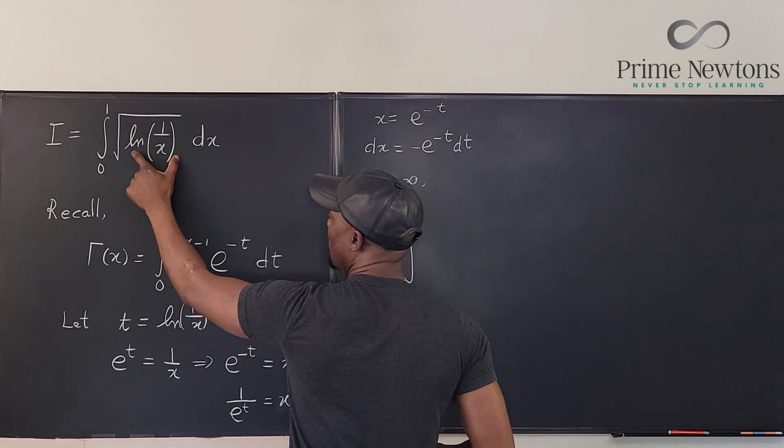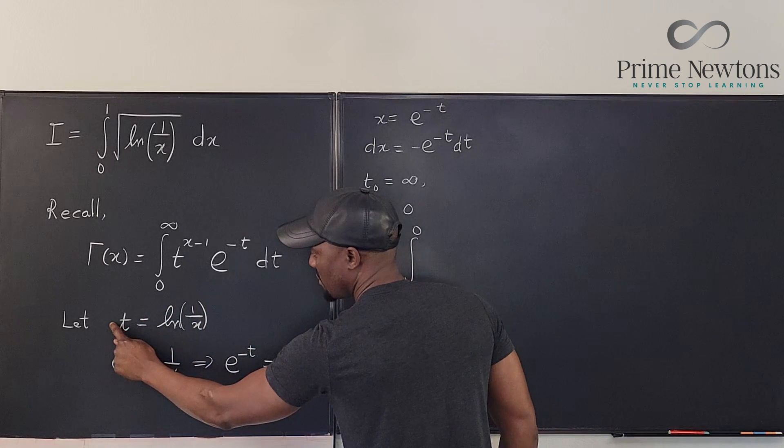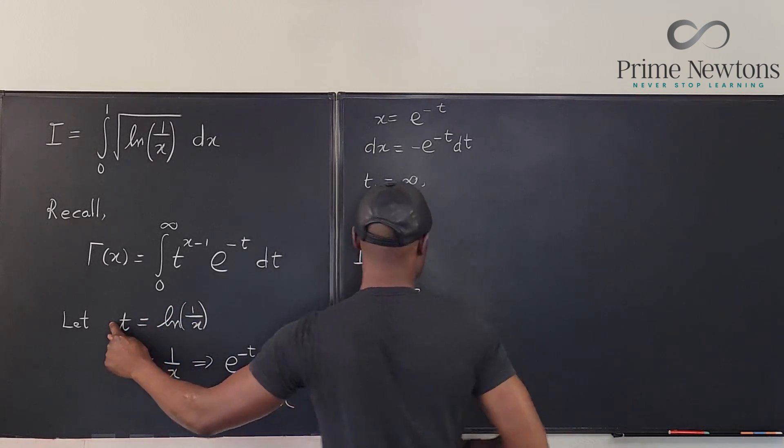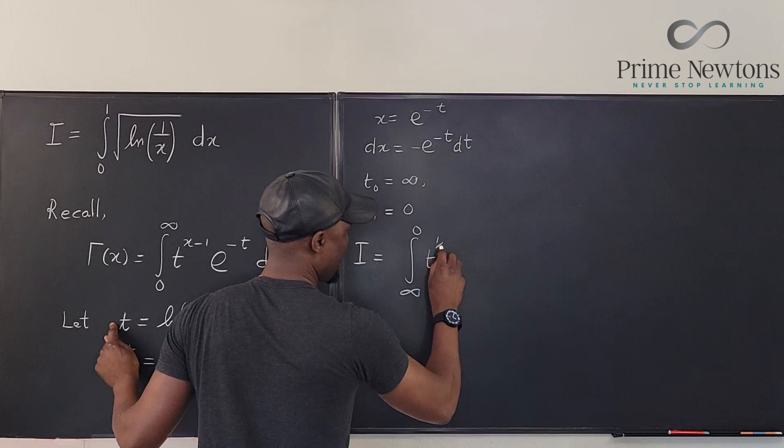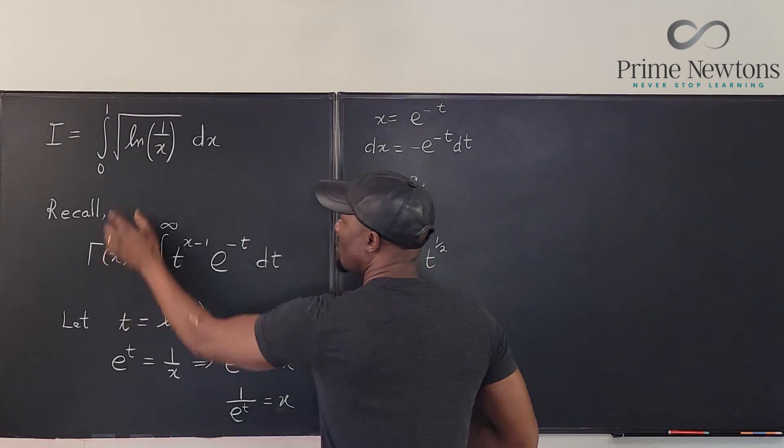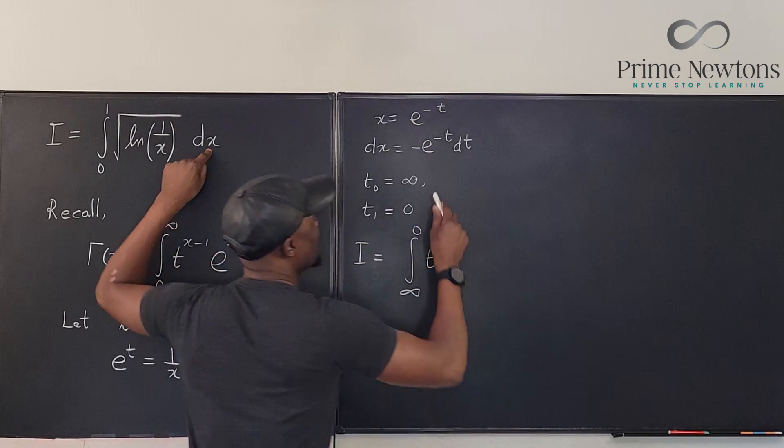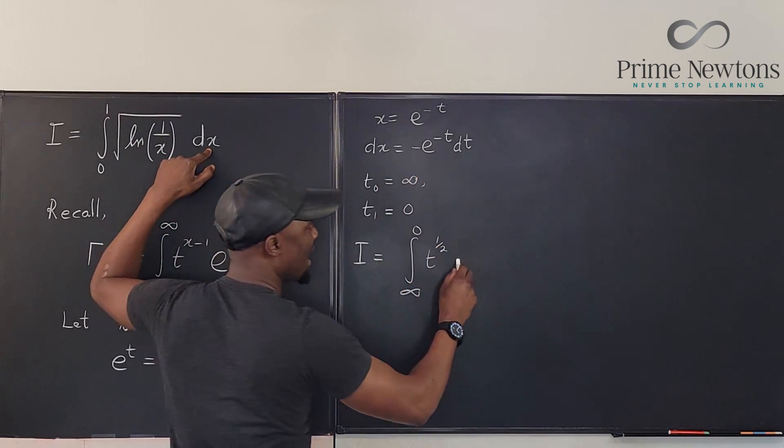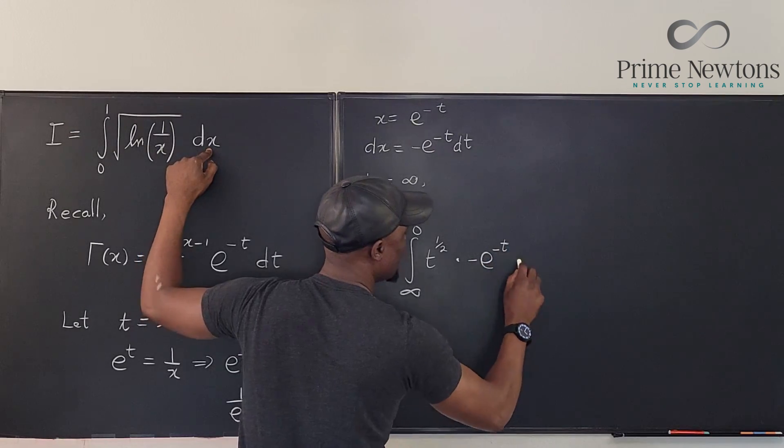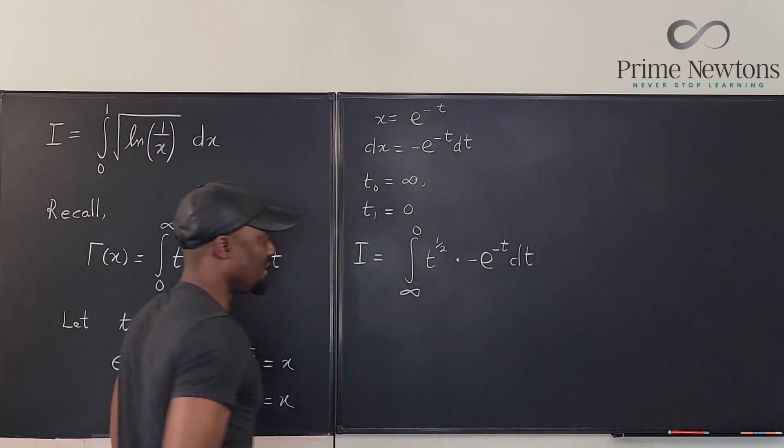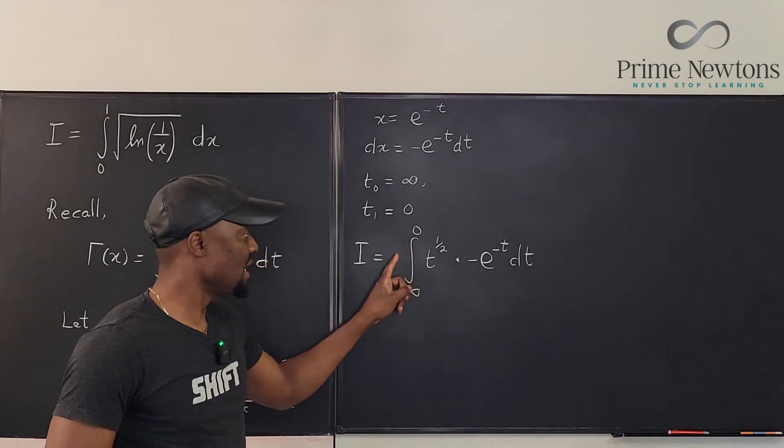And now what do we have? We have the square root of natural log of 1 over x. Well the square root of this will be t to the 1 half. So this whole thing is t to the 1 half. And what is dx? dx is negative e to the negative t. So times negative e to the negative t dt. And we can take care of this minus sign.